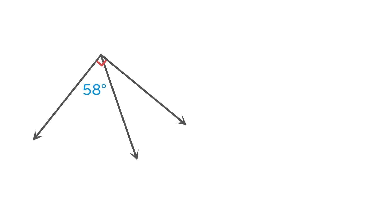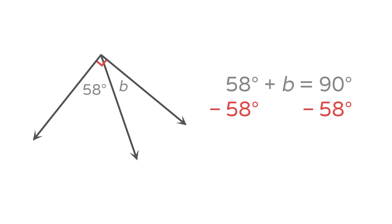This pair of adjacent angles form a right angle, as shown by the square marker. One angle is 58 degrees, and the other we'll label with the variable b. Since they are complementary, let's add the measures and set the sum equal to 90 degrees. To find b, we subtract 58 degrees from each side: b equals 90 degrees minus 58 degrees equals 32 degrees. So our missing angle is 32 degrees.